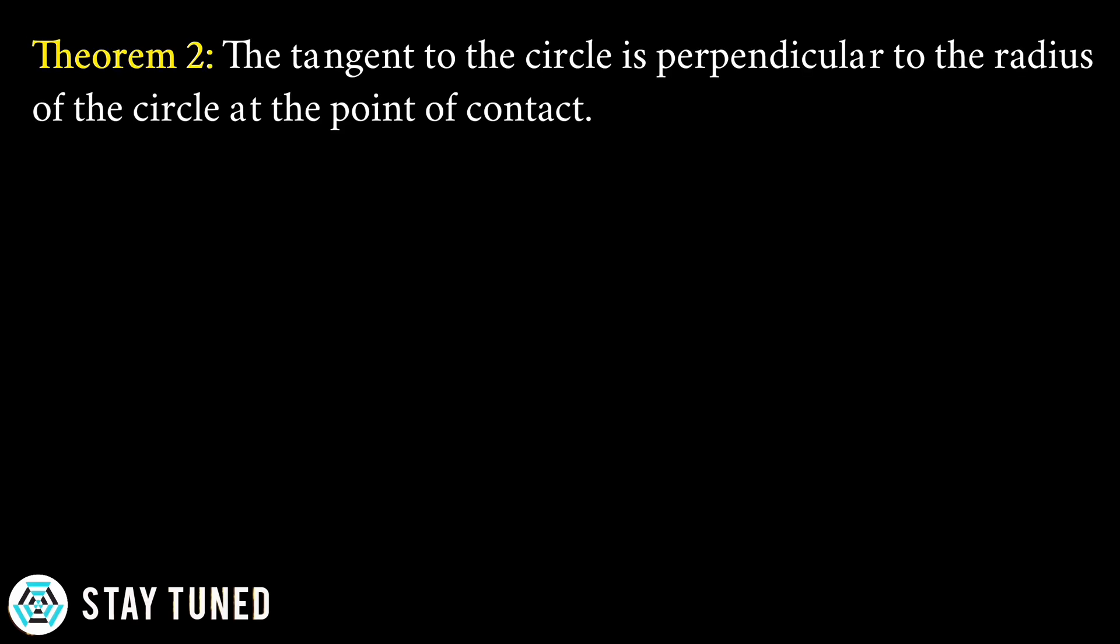The second theorem states that the tangent to the circle is perpendicular to the radius of the circle at the point of contact.